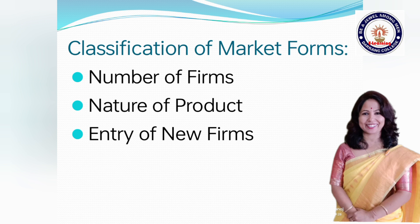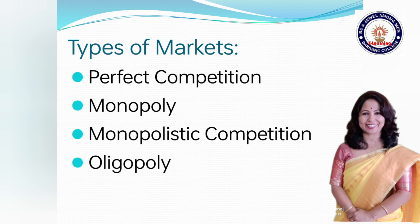The classification of market structure is based on three crucial elements. Number 1: the number of firms producing a product. Number 2: the nature of product produced by the firm. Number 3: the ease with which a new firm can enter the industry. There are four main types of market: 1. Perfect competitive market, 2. Monopoly, 3. Monopolistic competitive market, 4. Oligopoly.